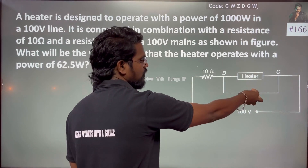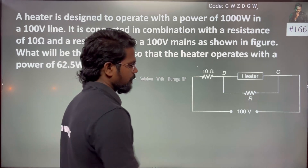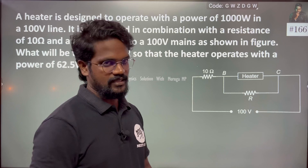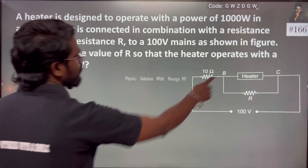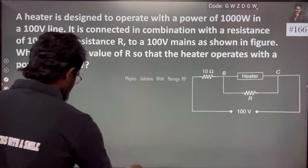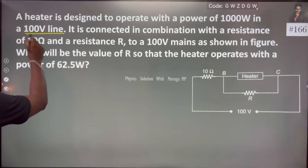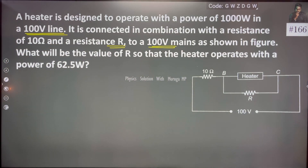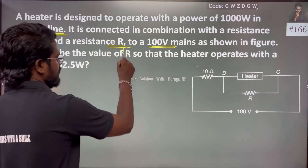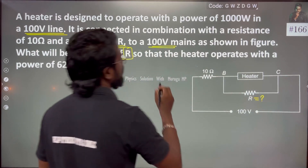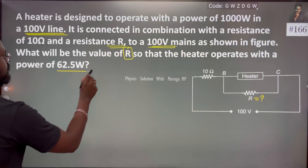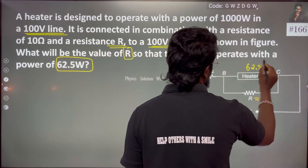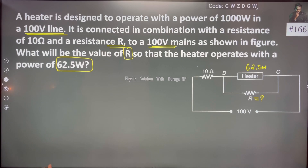The heater and resistance R are connected in parallel. Since they are connected in parallel, both have 100 V across them. The problem states that the heater operates with the power of 62.5 Watt.